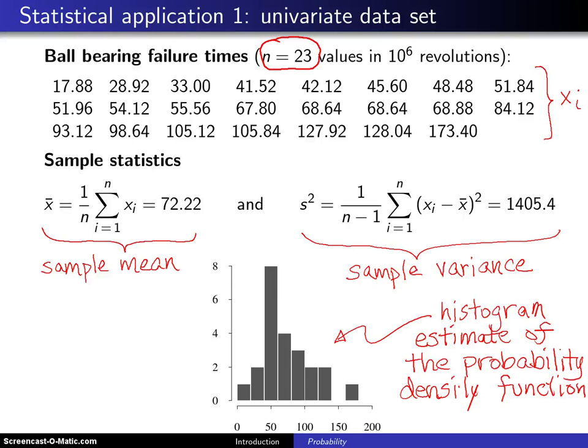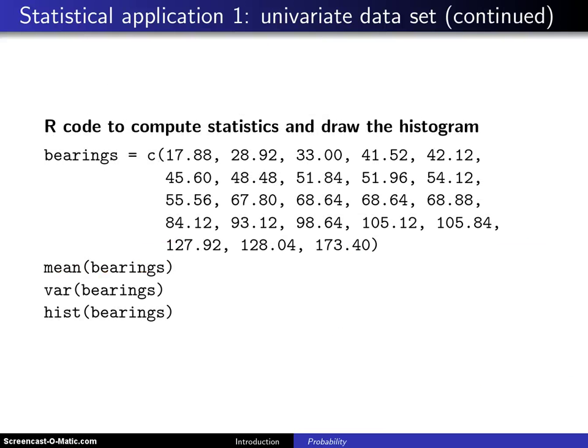Now there is a language which we're going to be referring to quite a bit in this course, and that is the language R, and R can get you these two sample statistics and the histogram fairly easily, and on the next slide you will see the code that is able to compute those statistics and draw the histogram. So the first thing I do here is I set a vector named bearings to the 23 ball bearing values using the C function, and C stands for combine.